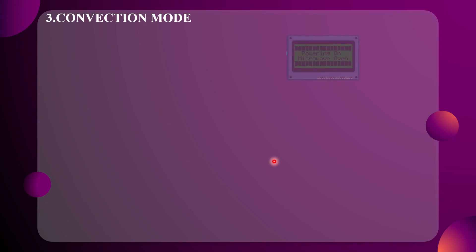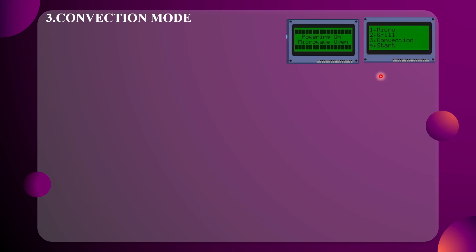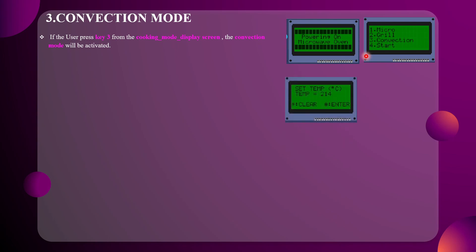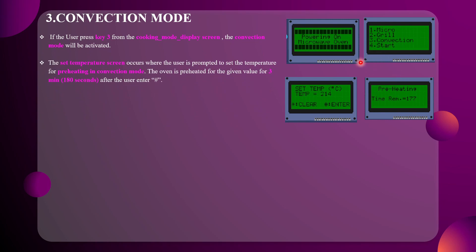Now let's move on to the Convection mode. Initially the power-on screen appears, then it returns to the cooking mode display screen. If we press option 3, the Convection mode is activated. In Convection mode, the user needs to press key 3 and then set a temperature value in the set temperature screen so that the oven can be preheated to that particular value.